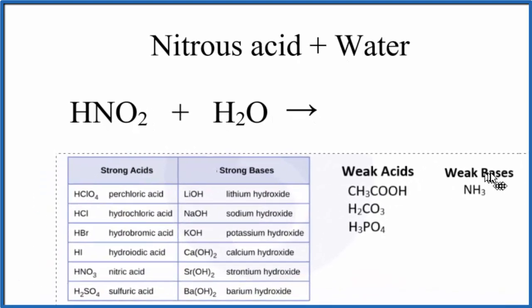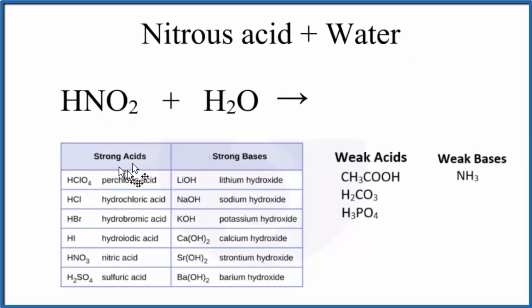Here's a list of strong acids and strong bases. Here are the strong acids, and we don't see HNO2. We see nitric acid HNO3, but not HNO2. So memorize your strong acids. You'll know that this is a weak acid, nitrous acid.